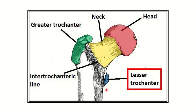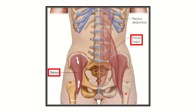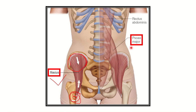We need to find the muscle attached to the lesser trochanter whose contraction causes avulsion. In the second picture, we can see the lesser trochanter. First, the iliacus muscle arises from the iliac fossa and inserts into the lesser trochanter. So contraction of the iliacus muscle may cause avulsion of the lesser trochanter.